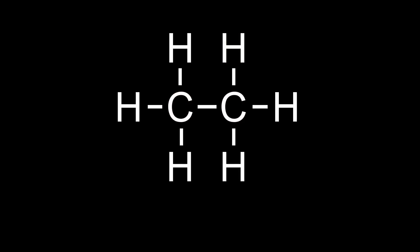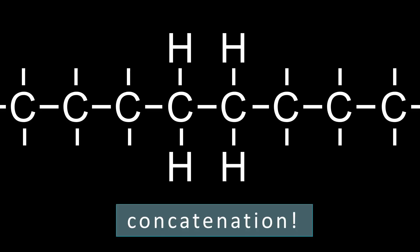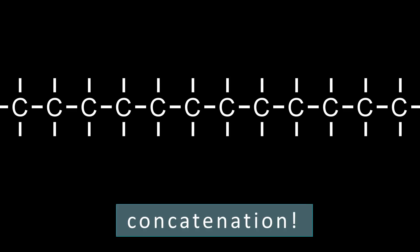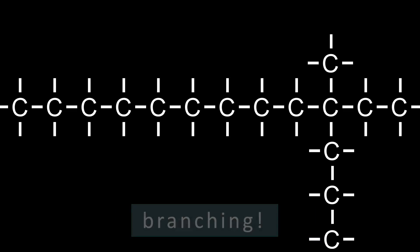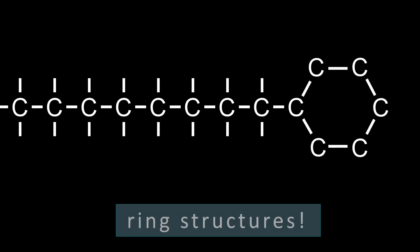Let's go back to our original molecule to see the many other things that carbon can do and how we can represent increasing complexity by creating what are called skeletal structures. Carbon can keep adding to itself, and this property is called concatenation — the ability to create long chains. Carbon can also branch off of itself, and this is called branching. And carbon can close those chains into ring structures.